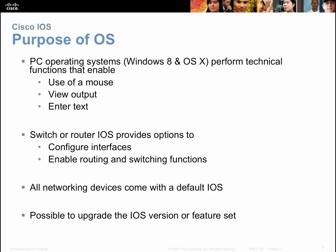All equipment comes with an OS. Typically, if you buy a PC, a phone, or a router or switch, they come with a default operating system. These are usually upgradable, so if you want additional features or a newer version, you can upgrade that operating system to get them.